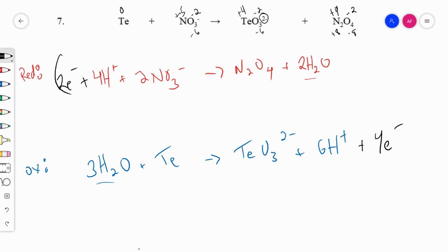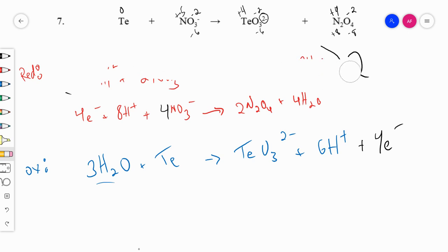Okay. And then we have to multiply to get the same number of electrons. So multiply this by two. And we get, so let's rewrite it here. We get four electrons, eight hydrogens, four NO3 minus. Two N2O4 plus four. So that one we changed. I'm just going to erase it. Make it all neat and tidy.